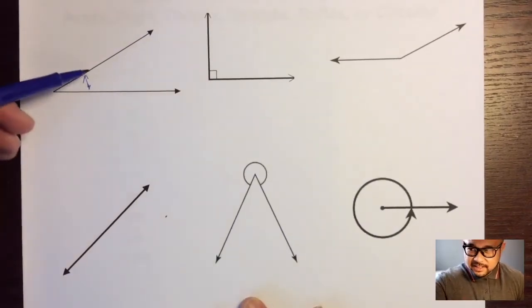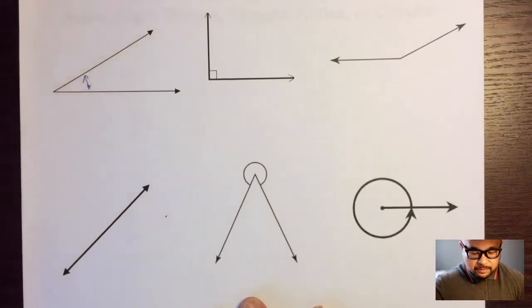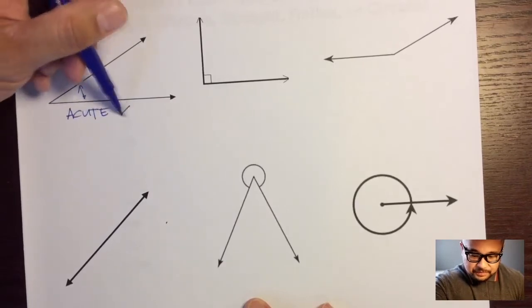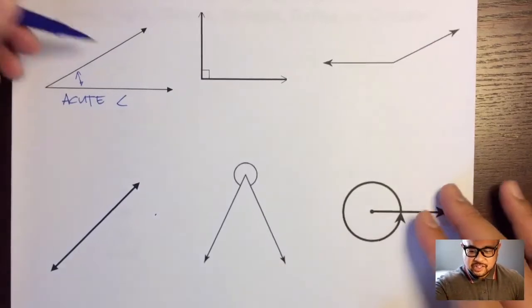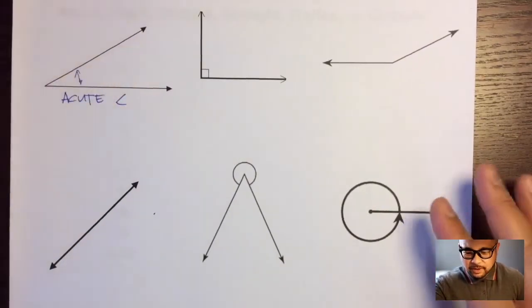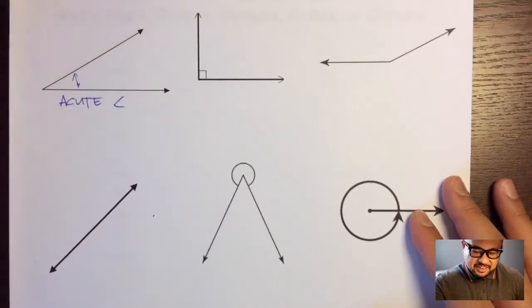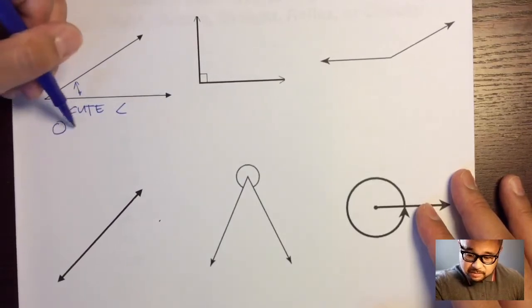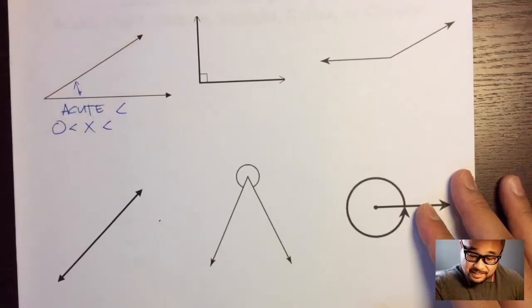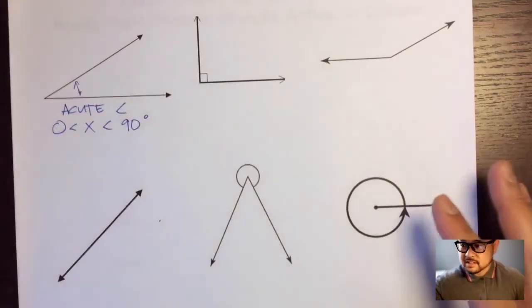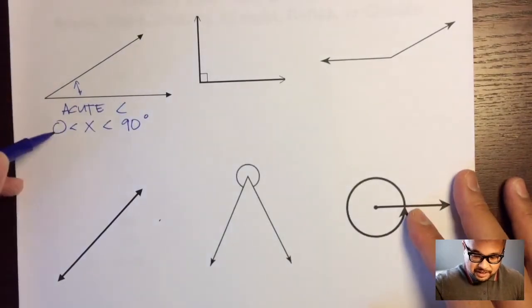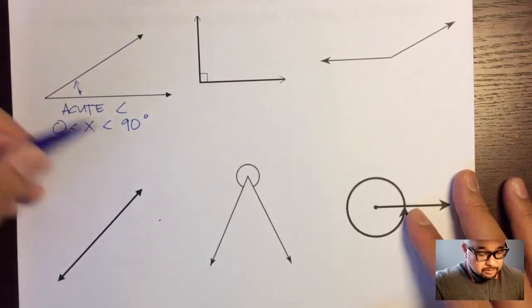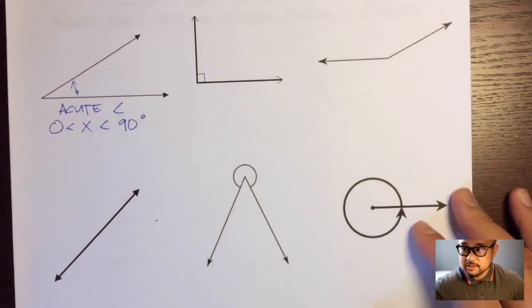This first angle where this line isn't so far away, it hasn't rotated so far away from the other line is called an acute angle. And here's a symbol for angle if you don't want to write angle. Look, it's so cute. It's so small. It's not so far away from its friend, the other line. The measurements for acute angles are greater than zero degrees, but less than 90 degrees. So in between zero and 90, but not equal.